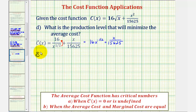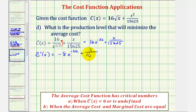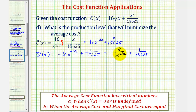The derivative of the average cost function: multiply 16 by negative 1/2 to get negative 8, subtract one from the exponent giving x to the power of negative 3/2. The derivative of x divided by 15,625 is 1 over 15,625. This is equivalent to negative 8 divided by x to the 3/2 plus 1 over 15,625. When x equals zero, the derivative is undefined, but a production level of zero is not feasible, so we set this equal to zero and solve for x.